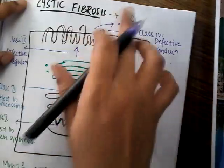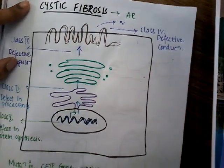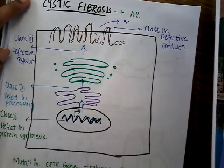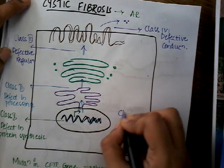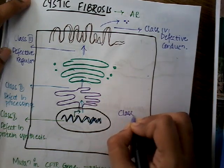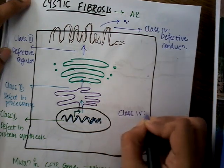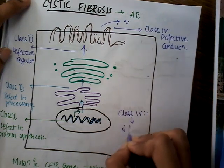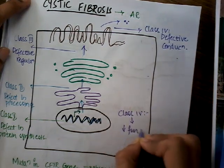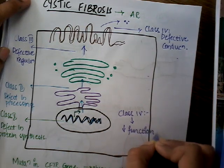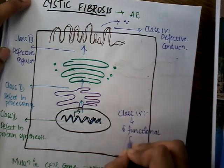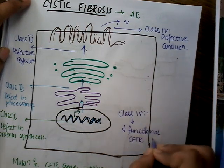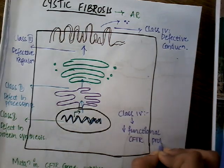Finally, Class 5 is where there is decreased functioning CFTR protein. The CFTR protein is present, but it is present in smaller amounts, so there is decreased CFTR protein overall.